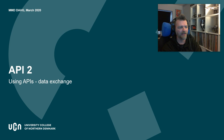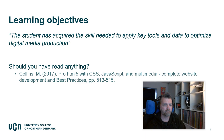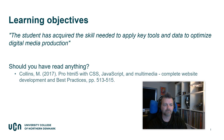API2: using APIs for data exchange. We're basically using JSON data again today, grabbing that JSON data from external sites or sources. The learning objective for today is that you have acquired the skill needed to apply key tools and data to optimize digital media production. There is a small amount of reading for you: some best practices on pages 513 to 515 in the ProHTML5 book.